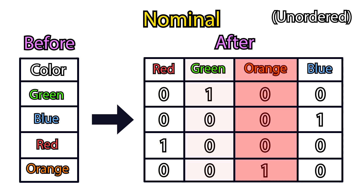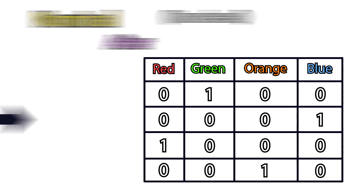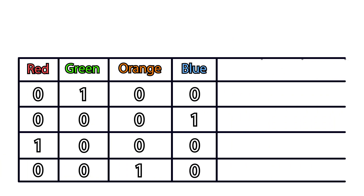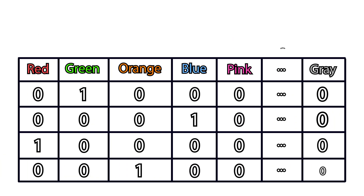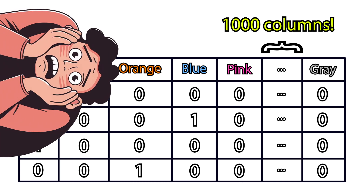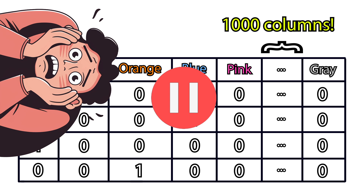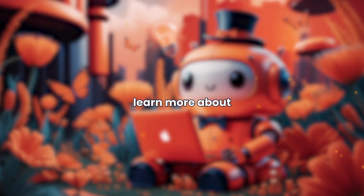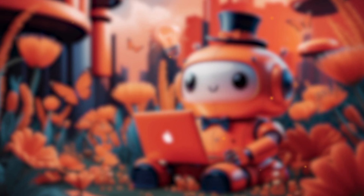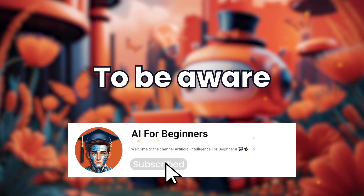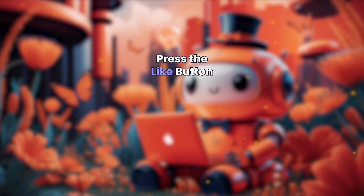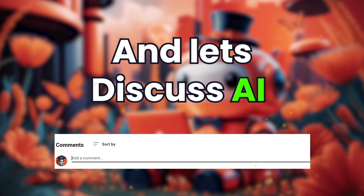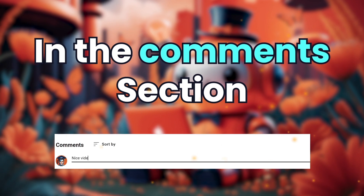Now you may ask: what if I have 1,000 unique categories? My dataset will have more than 1,000 columns. These are important questions to be answered in the upcoming videos, so subscribe to stay updated. If you want to learn more about artificial intelligence, subscribe to our channel to be aware of new videos. Press the like button and let's discuss AI in the comments section.